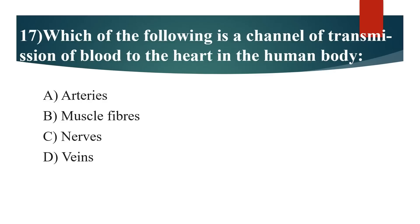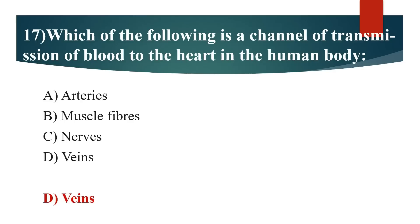17th question: Which of the following is a channel of transmission of blood to the heart in the human body? Option A: Arteries. Option B: Muscle fibers. Option C: Nerves. Option D: Veins. Answer is Option D: Veins.